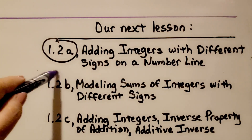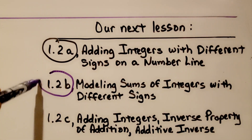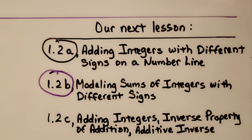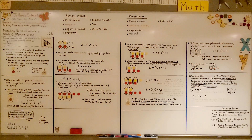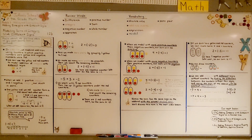We finished this part of the lesson. We're going to move on to 1.2c, which is adding integers, the inverse property of addition, and additive inverse. Now you can try using counters — or making your own or drawing them — to add integers with different signs.